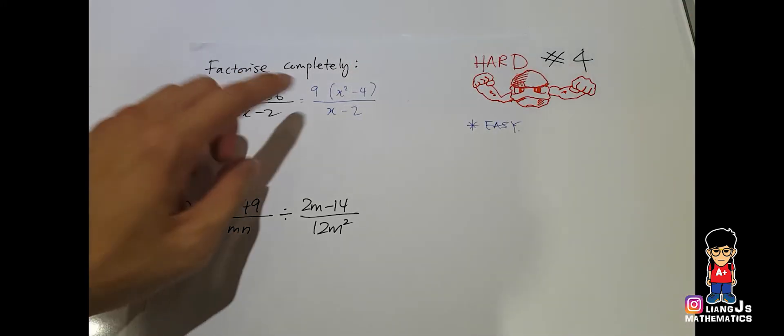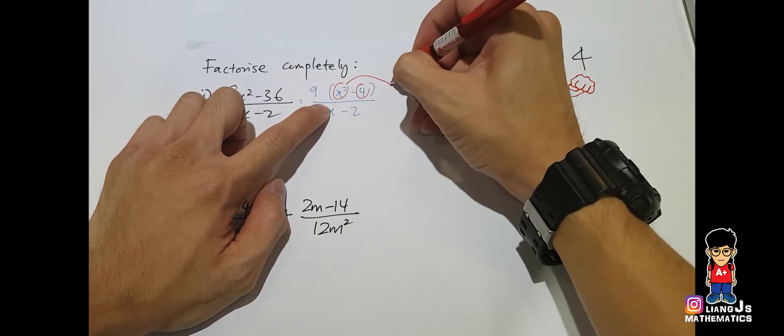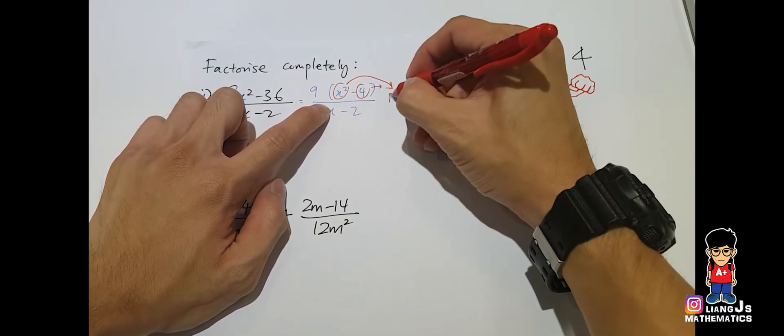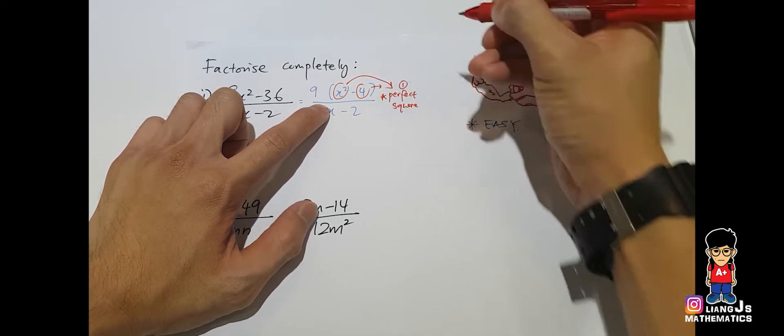So what you notice here is, the x square and 4, it belongs to this category where we name it as perfect square. So that's the first thing that you have to be aware of. Okay, that's the first thing.